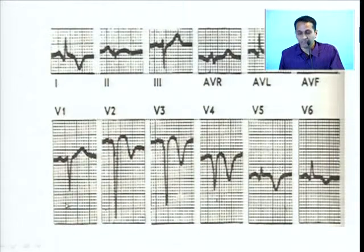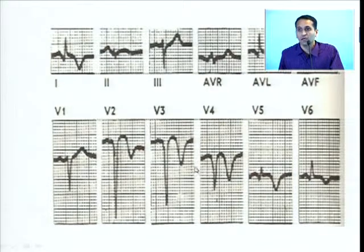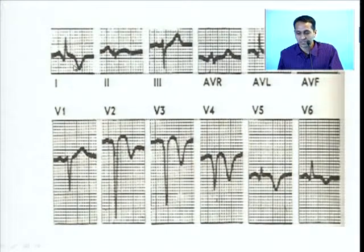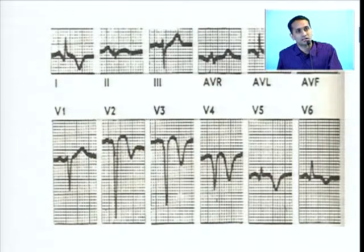If you see this ECG, it's very simple — you will say it's an evolved anterolateral Myocardial Infarction because you already have poor R wave progression from V1 to V4 with established QS and T inversion from V2 to V5-V6. But notably, in V5 and V6 you have well-preserved R waves, and T wave inversion in leads 1, AVL, V5, V6. So it's still possible that though this patient has had an anterolateral MI, you may have some area of salvageable Myocardium.